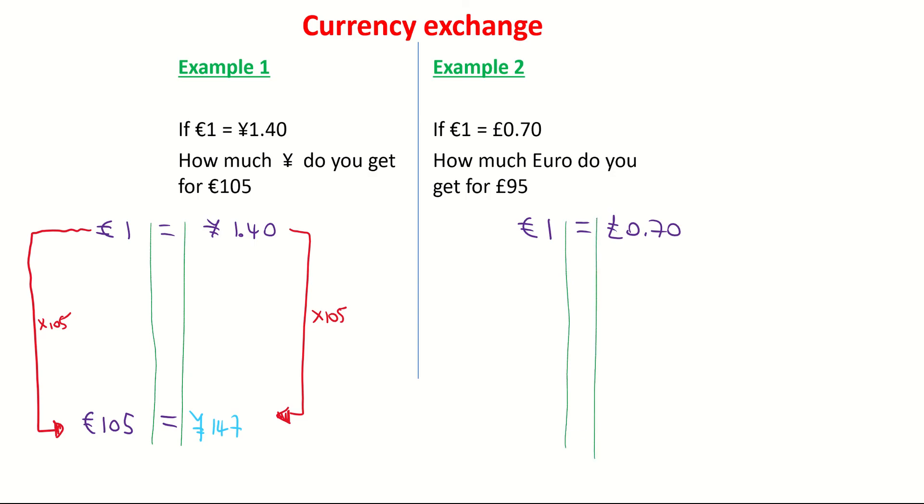I write down what I'm trying to achieve. Slightly different this time. I'm now looking for the value of 95 pounds. So I'm putting that on the right-hand side. I'm putting pounds under pounds, euros under euro. So I want to find out, what's that worth in euro? What's 95 pounds worth in euro?